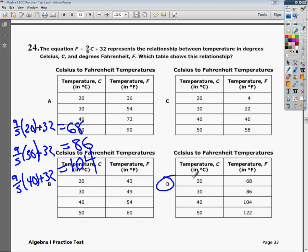And if you wanted to check by plugging in 50, if you do 9 fifths times 50 plus 32 and hope that you get 122, well, you absolutely do get 122. So the answer to this is D.